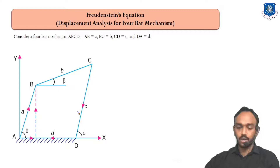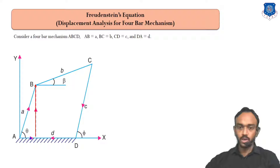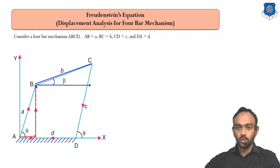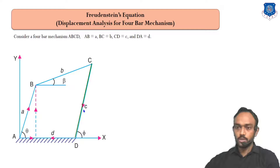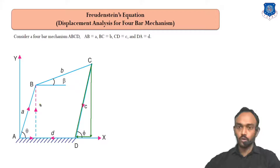What we will do is take the components of all the links. You can see here — this is the AB link. We can take two components of this: the sine component and the cosine component. For each link, if the link length is B and it makes a beta angle, I can take two components: B cos beta and B sin beta. Similarly, I can take the components of the C link because there is a phi angle — C cos phi and C sin phi.